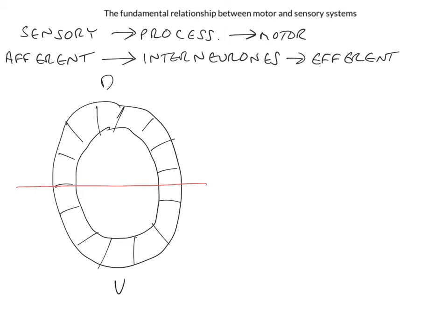The dorsal half of the neural tube, we call the alar or roof plate. I think it's easier to remember it as the roof plate. And the ventral half of the neural tube is called the basal or the floor plate. And it is from these two regions that the various neurons of the central nervous system are derived.